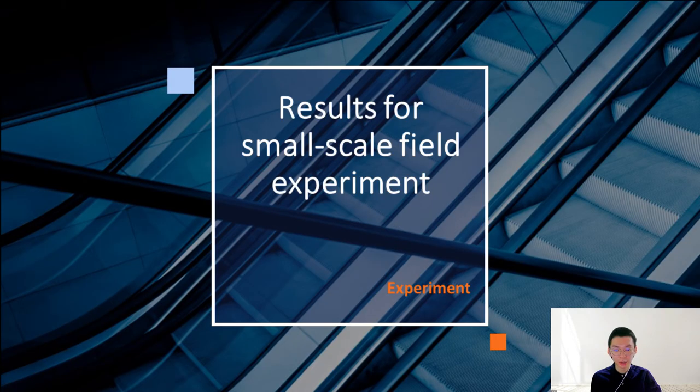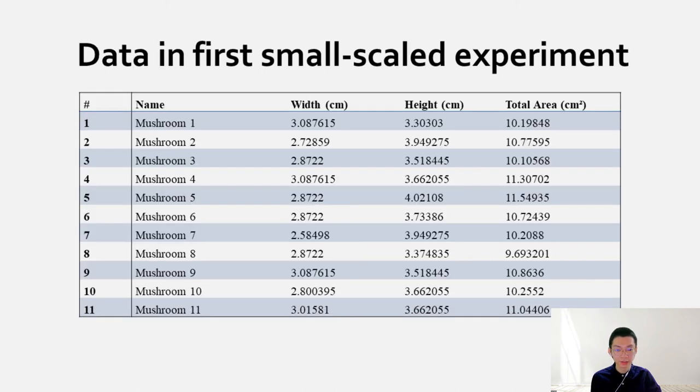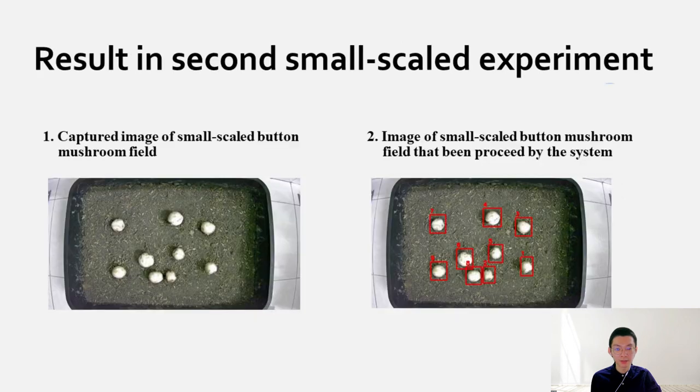Now I move on to the result part. There are three different button mushroom small-scale fields being conducted in this experiment. The figure on the left side shows the original image of button mushroom captured using the system in the first field experiment. The right side image shows the button mushroom detected and localized by the detection and measurement system. The table shows the result produced by the system after prediction in the first experiment.